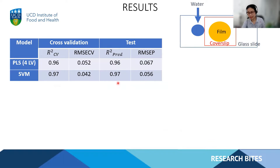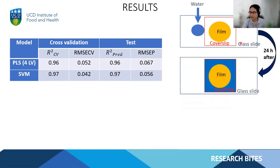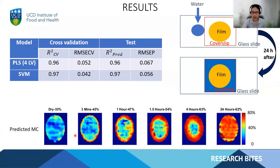To visualize the prediction results, we introduced a rehydration experiment where water is introduced at the boundary of the cover slip. After several hours, water migrates into the film samples and surrounds it. At each time point of the rehydration, we collect the spectra and apply the built model to predict the moisture content, as seen here. High values of moisture content are indicated in red. We can clearly visualize the growing red pixels from the edge into the center, and after 24 hours all the samples are immersed with high moisture content pixels.